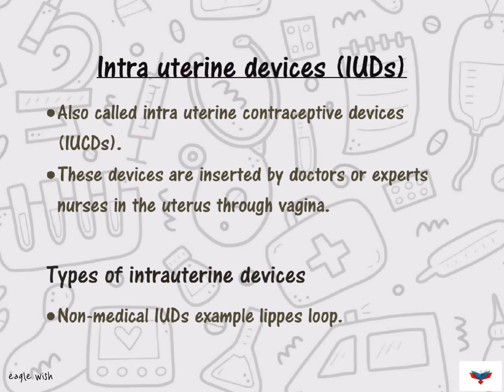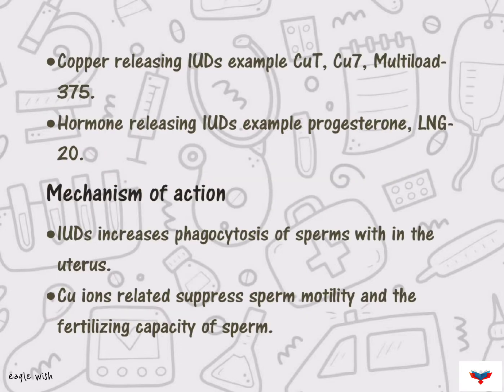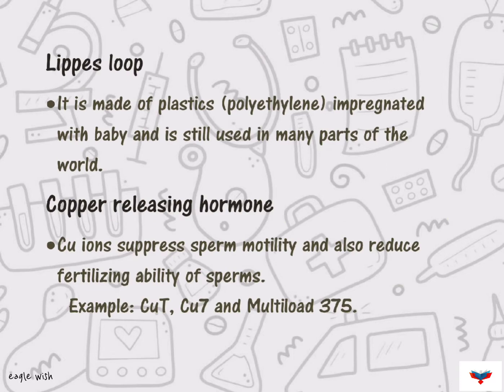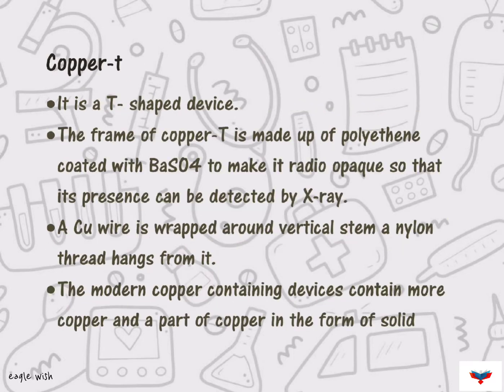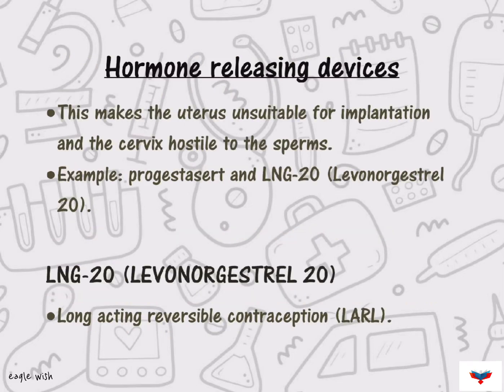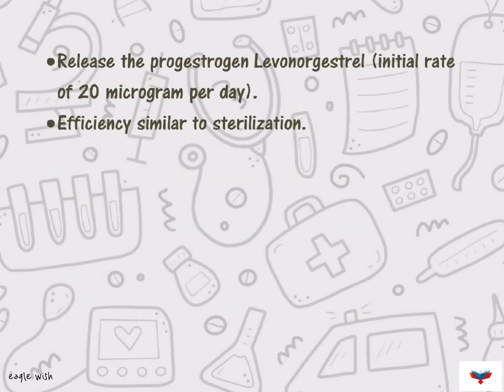Intrauterine devices are of three types: non-medicated IUDs, copper-medicated IUDs, and hormonal-medicated IUDs. According to NCERT, IUDs are the ideal contraceptives for females.